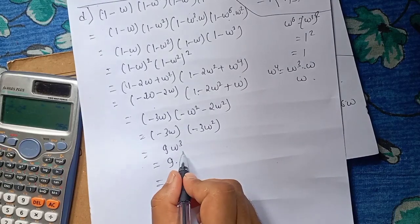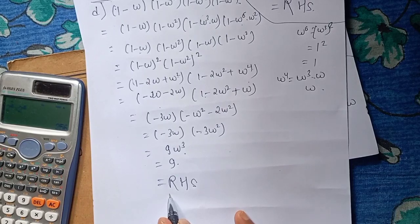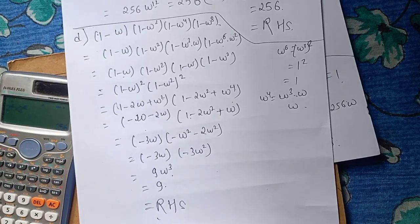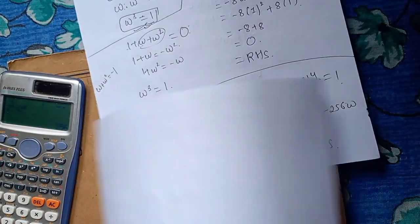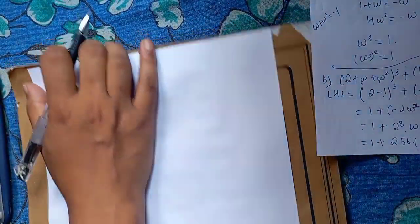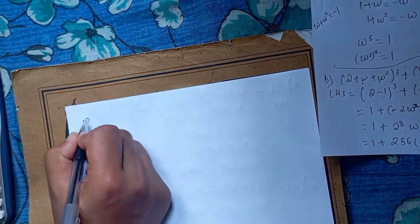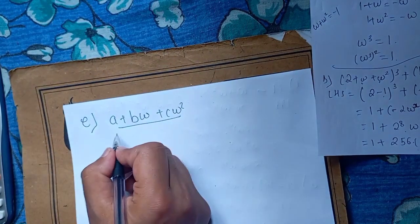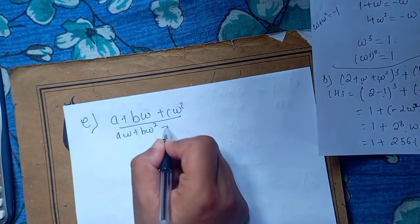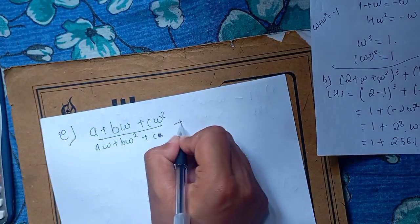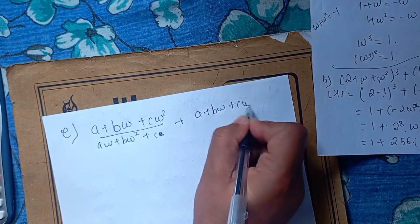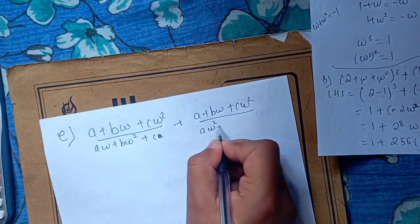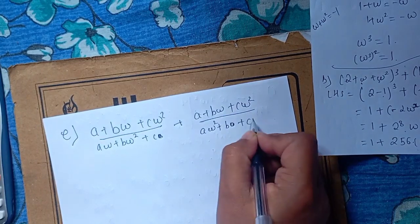Then minus 3 omega squared, minus 3 omega squared, minus 3 omega squared. So we have to find a d number. We will find a d number. A plus b omega plus c omega squared. A omega plus b omega squared plus c — c matrix. Plus a plus b omega plus c omega squared, by a omega squared plus b plus c omega.